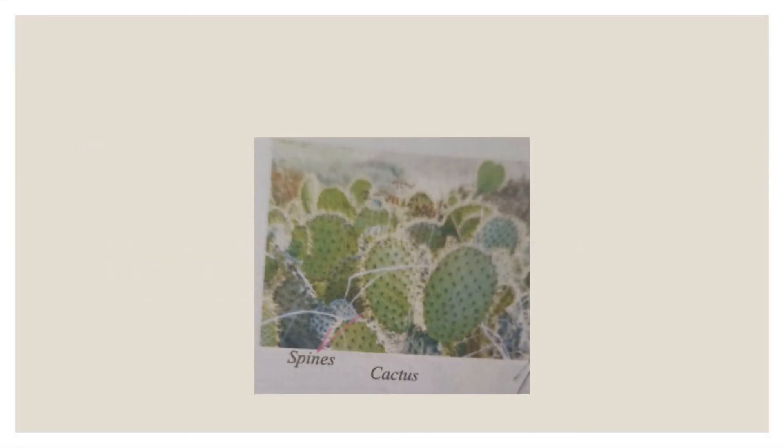Here you can see the picture of cactus. The green fleshy part visible is the stem, and the spines are actually the leaves of the plant.